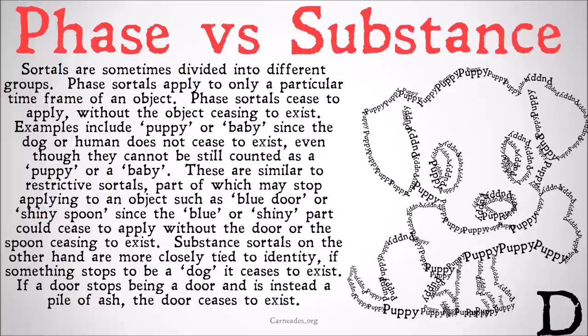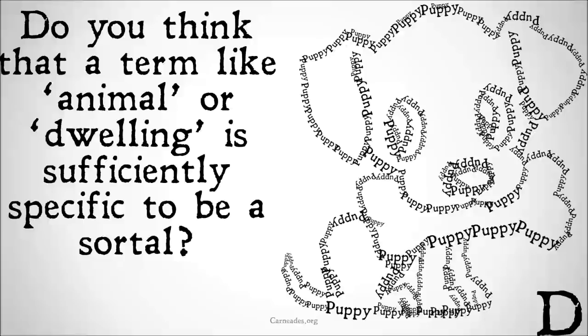Do you think a term like 'animal' or 'dwelling' is sufficiently specific to be a sortal? What about phase sortals — do you think that when something goes from being a door to a pile of ash, is that just a natural part of that object's life in the same way that something going from being a puppy to being a dog would be? Or is there some inherent distinction that can be made there? Write your answers in the comments below. Watch this video and more here at Carneades.org and stay skeptical, everybody.